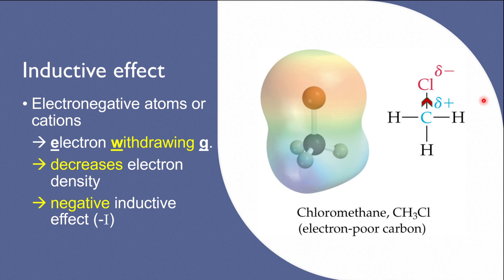In this example, chlorine is more electronegative than carbon, so it will pull electrons towards itself, thus decreasing the electron density in the molecule. Chlorine is therefore said to have a negative inductive effect. Electron-withdrawing groups decrease electron density and have a negative inductive effect.